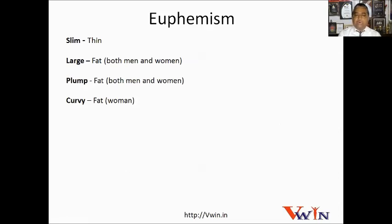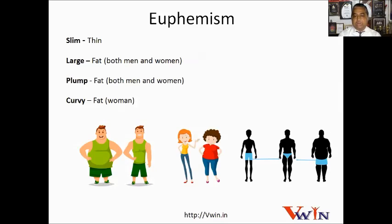Let's talk about euphemisms. Euphemisms are indirect words that don't offend others but communicate a similar meaning. For example, slim is a euphemism for thin — use slim instead of thin. Similarly, instead of calling someone fat, call them large or plump. It is better to use these words instead of fat.